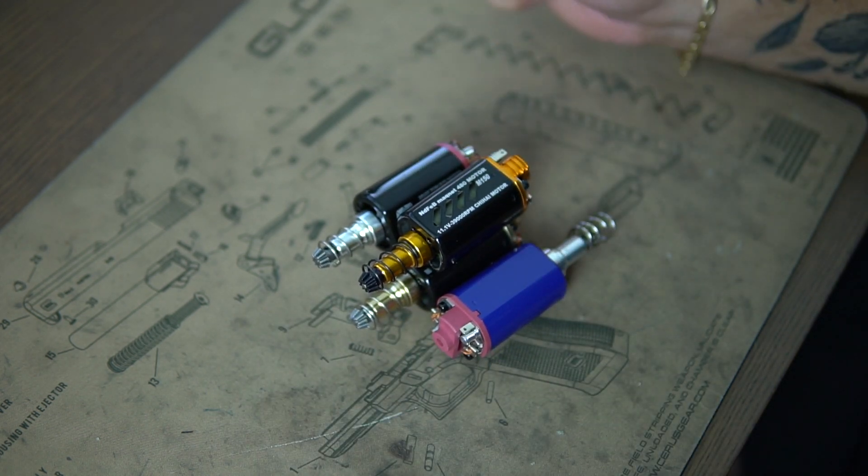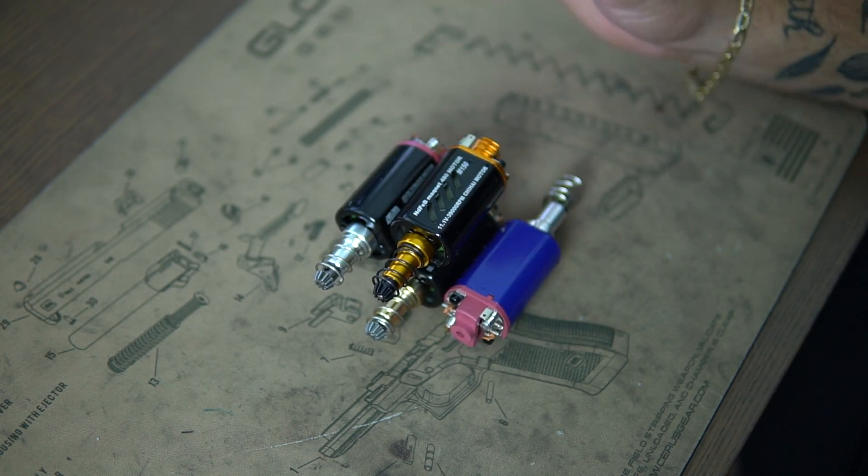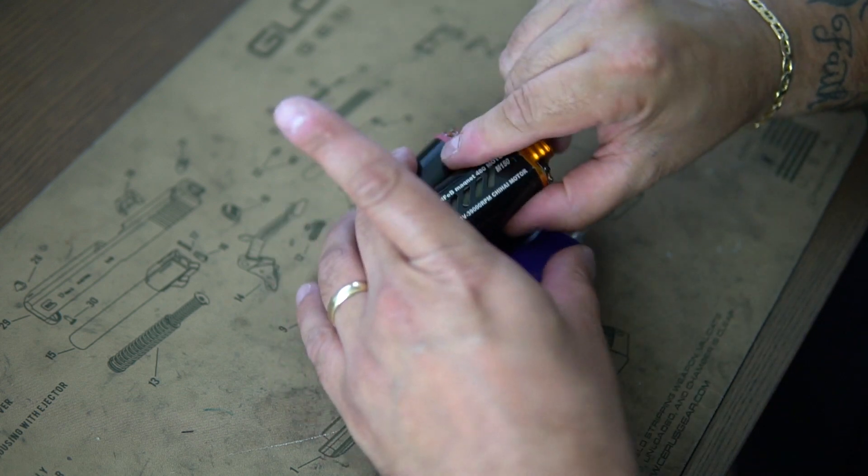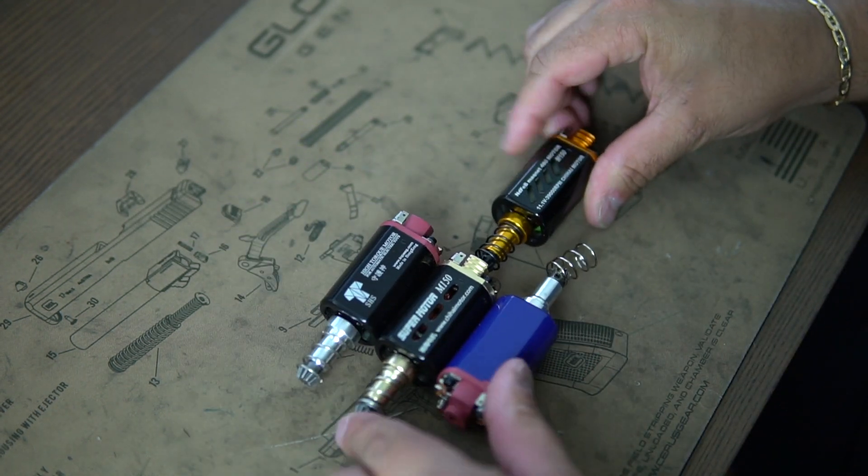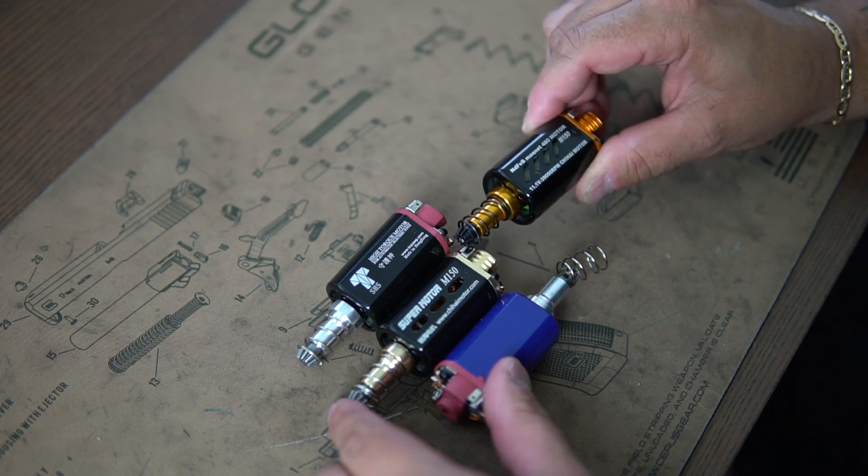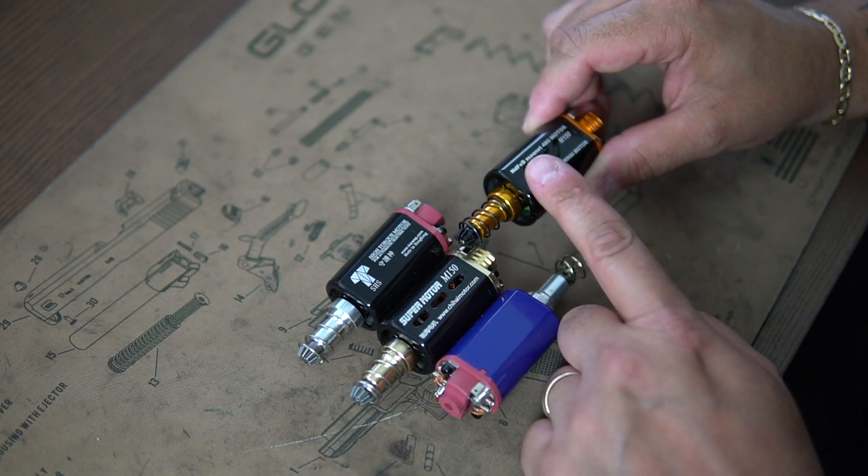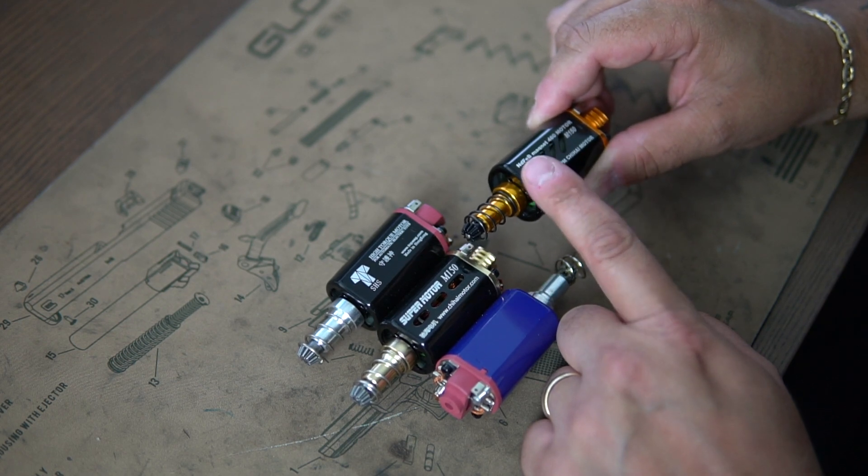So we have the new gold M150 motor, pretty much the same as the original M150 motor below it, but it's just newer. It does have slightly higher speed than the super motor. So this has slightly high speed and is definitely a high torque as well.